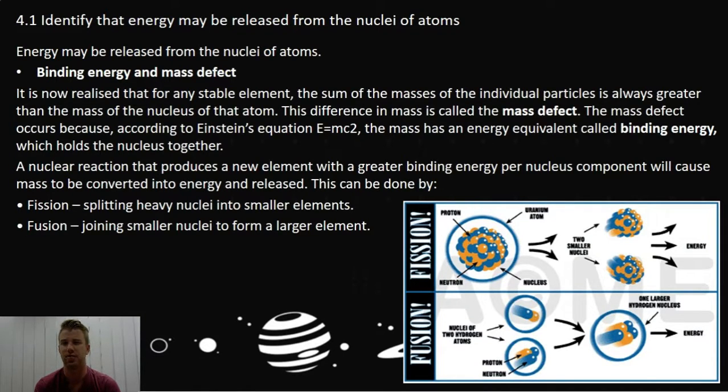It is now realized that for any stable element, the sum of the masses of the individual particles is always greater than the mass of the nucleus of that atom. This difference in mass is called the mass defect. The mass defect occurs because,